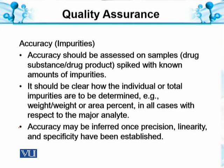Accuracy should be assessed on samples of drug substances and drug products spiked with known amounts of impurities. It should be clear how individual or total impurities are to be determined — by weight percent or area percent — in all cases with respect to the major analyte. If the method is correct, any deviation can be identified. We will try to figure out the weight or area percent in all cases with the impurities and how the recovery has been calculated.